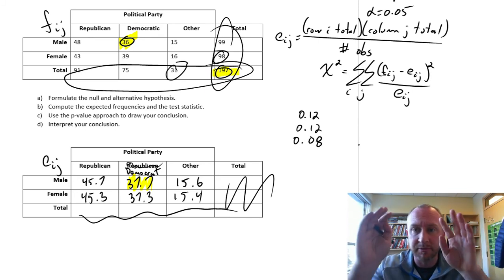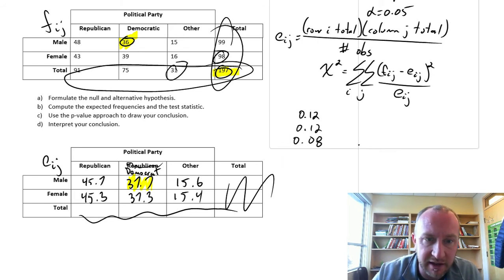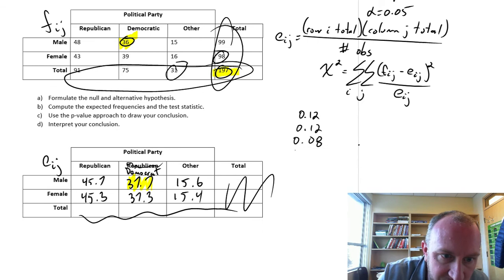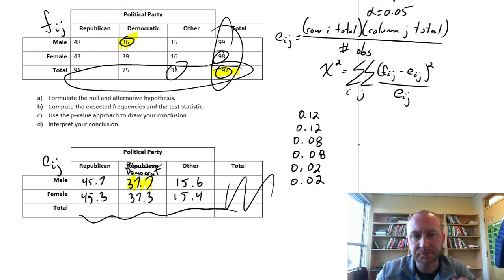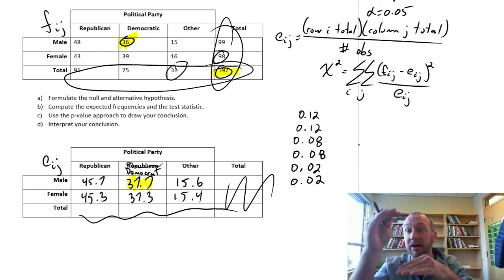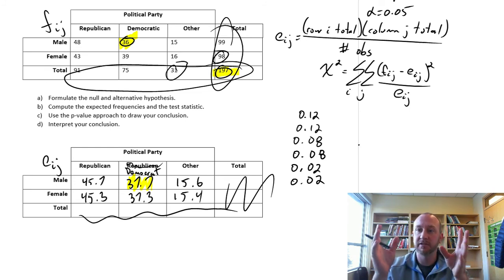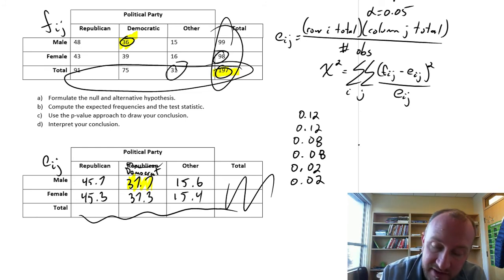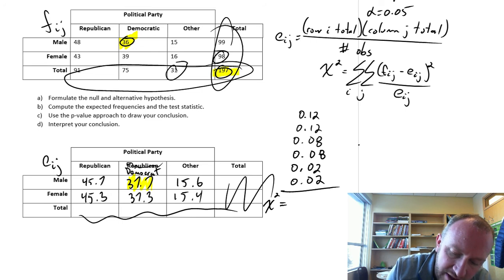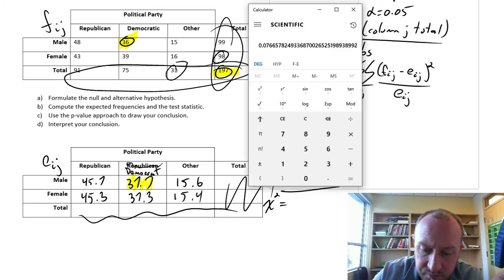We have to do this three more times. I'm going to skip through some of these. I've already got the answers here in front of me. I'm going to put you to sleep if I make you watch all of these calculations. The next one is also 0.08. The next one would be 0.02 and 0.02 again. That's going through all six of those pairs, taking those differences, squaring them, dividing them by the expected frequency.